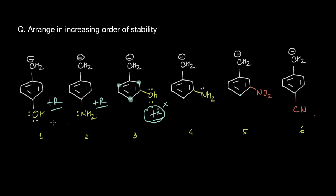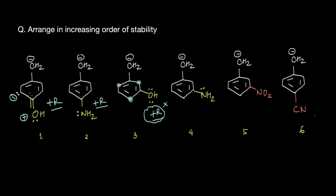Now compare what happens when OH is at the para position. The lone pair is pushed into the benzene ring, creating a negative charge on that carbon atom. Drawing further resonating structures, the lone pair ultimately lands here. So with OH at para, there's a negative charge developed at the ortho and para positions of the OH group. The presence of an electron-donating group brings negative charge only at these specific positions.